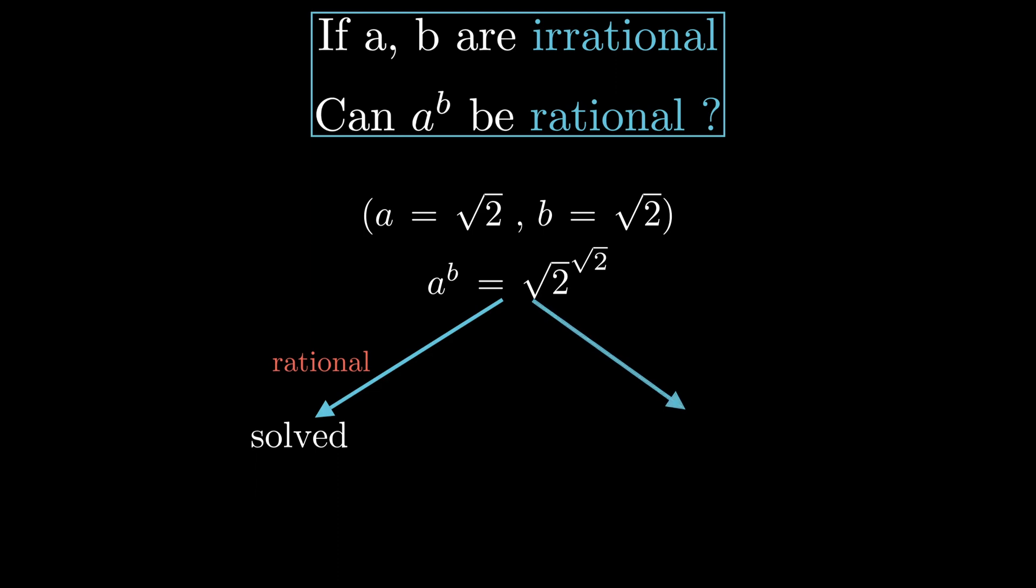If it is irrational, let's make a equal to root 2 power root 2. Well, a power b now becomes root 2 squared, which is 2, which is rational. And there is no third way for this system to evolve.